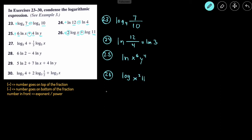Number 27: we transfer over the log base 5 and add a fraction. There's a positive, so the 4 goes on the top. There's another plus, so x goes on the top as well. The number in front of the log becomes the exponent, so it's x raised to the power of one third, giving us log base 5 of 4x^(1/3).